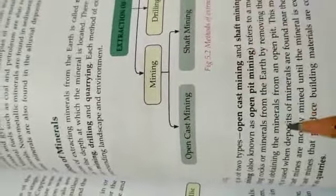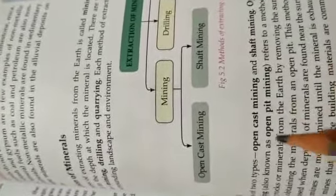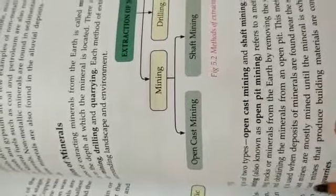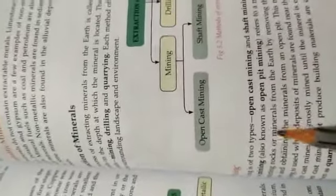First, we talk about mining. Mining is of two types: open cast mining and shaft mining. Open cast mining, also known as open pit mining, refers to a method of extracting rock or minerals from the earth by removing the surface and obtaining the minerals from an open pit. This method is used when deposits of minerals are found near the surface. Open cast mines are mostly mined until the mineral is exhausted. Open cast mines that produce building materials are commonly known as quarries.